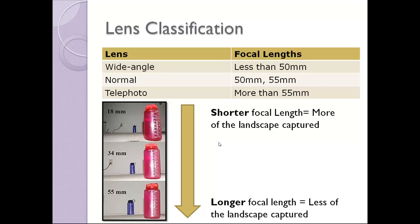How do we classify a lens? A lens is determined as a wide angle if it has less than 50 millimeters. A normal lens is within the range of 50 and 55 millimeters. A telephoto or zoom lens has a focal length of 55 millimeters or more. The shorter the focal length, the more of the landscape can be captured. For example, here in this top photo, the focal length is 18 millimeters and it captures a wide area of subjects, for example, the appliance card and the two bottles.